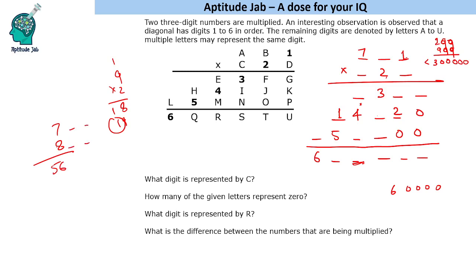Seven hundred something multiplied by some number is giving us six and all these digits. If we say seven into eight, it gives us 56 — fifty-six is the minimum. If these numbers are high, this can go up to sixty. So if we take eight here, the last two digits would be around fifty-six, but this position is minimum six. Depending on the carry it can become six. But seven hundred something into eight hundred something cannot give sixty-six here. So it will be nine. Nine into one is nine; nine into seven is sixty-three, so minimum six, and with no carry it should be sixty-five.